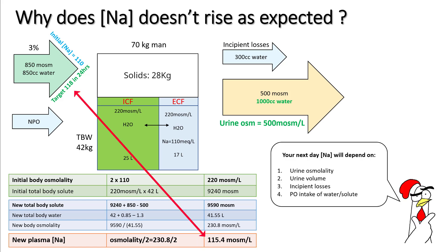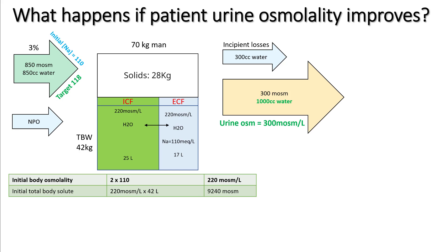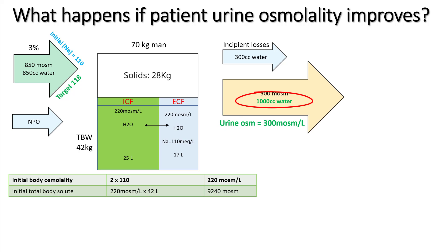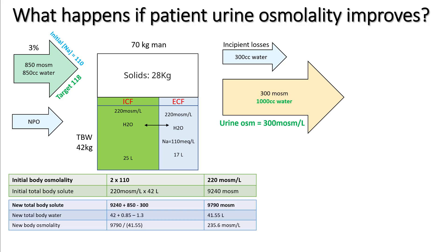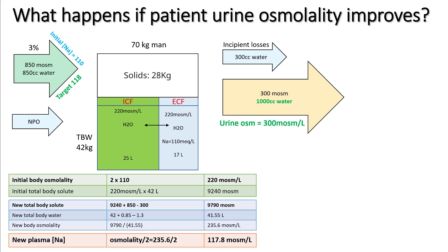So your sodium level the next day will depend on urine osmolality, urine volume, insensible losses, and oral intake of water and solute. What happens if urine osmolality improves? This is a much more common scenario — as patients improve, urine osmolality tends to improve. Assuming the same urine volume, after similar calculation you get a sodium of 117.8.